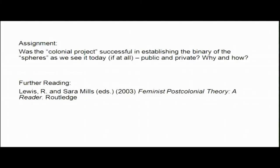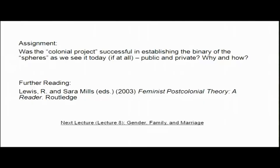I want to leave you with a question: was the colonial project successful in establishing the binary of the spheres — public and private — as we see it today, if at all? Why and how? Do you think that having discussed these scholarly trends and works, the colonial project was successful in establishing the binary of the public and the private? Do we see it today, or do we see a different binary? If you are interested in further reading, please take a look at Lewis and Mills' Feminist Postcolonial Theory, which is a reader. In the next lecture, I will take up the issues of gender, family, and marriage. Thank you.